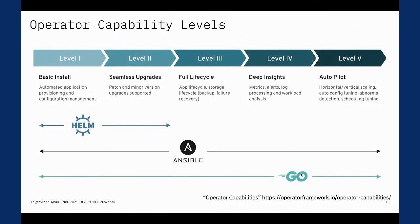There are three main languages used to implement operators: Helm, Ansible, and Go. About 70% of the operators in OperatorHub are implemented in Go, so that's probably what you'll use most of the time. Helm is easier to get started with, especially if you don't already know Go, but the problem with Helm is that you can only achieve level one and level two operators. If you want all five levels, you'll need to switch to Ansible or Go.